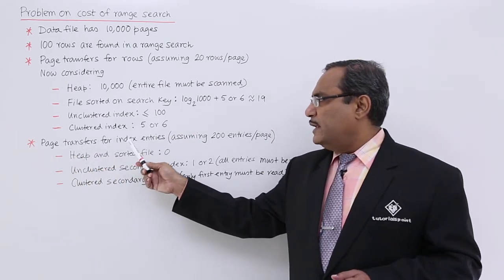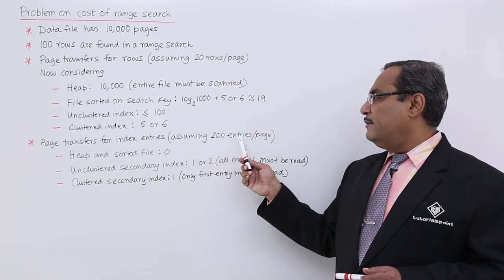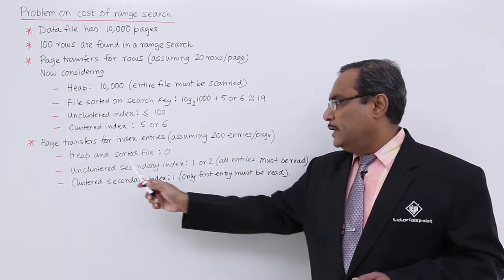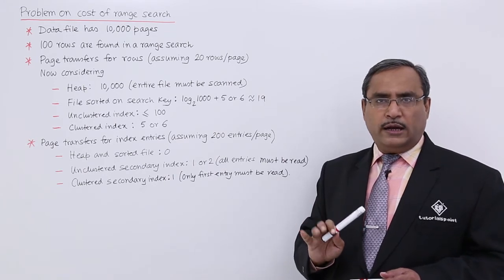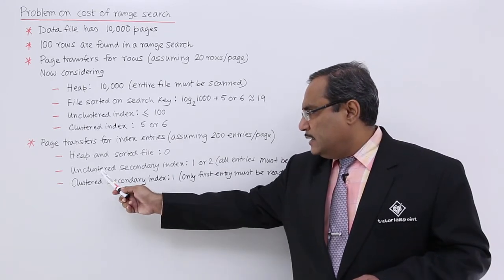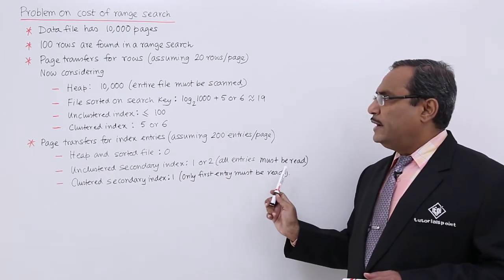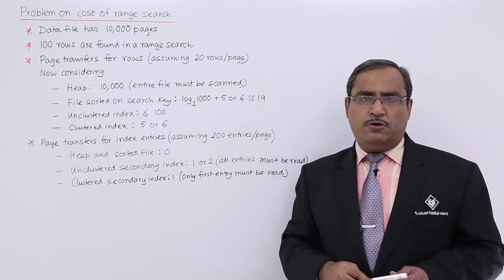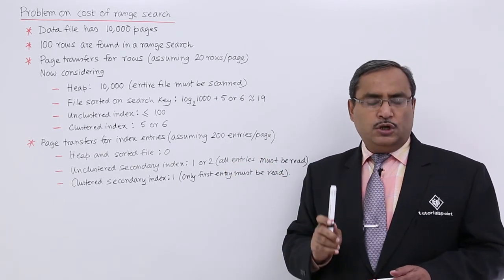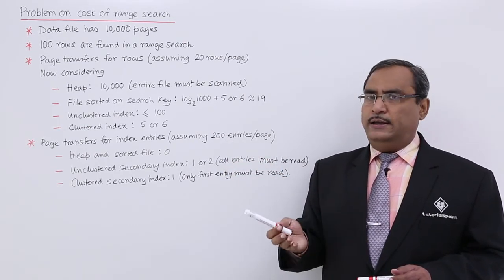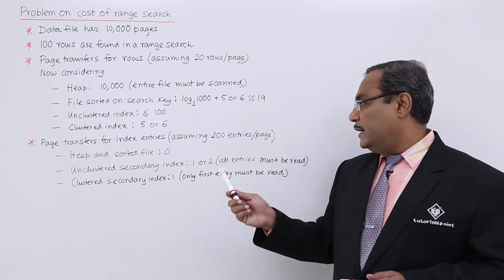Now, page transfer for index entries. Here assuming 200 entries per page. For heap and sorted file it will be 0 because they are not bothering for any kind of index. Unclustered secondary index it will be 1 or 2, all entries must be read.